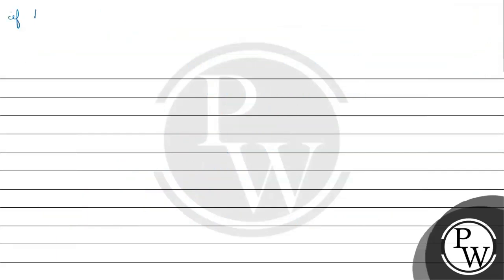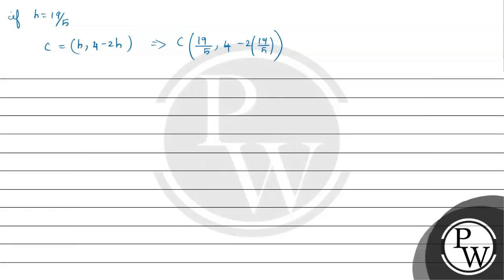If h = 19/5, the coordinate of C is (h, 4 − 2h). Substituting, C = (19/5, 4 − 2 × 19/5) = (19/5, 4 − 38/5) = (19/5, −18/5).